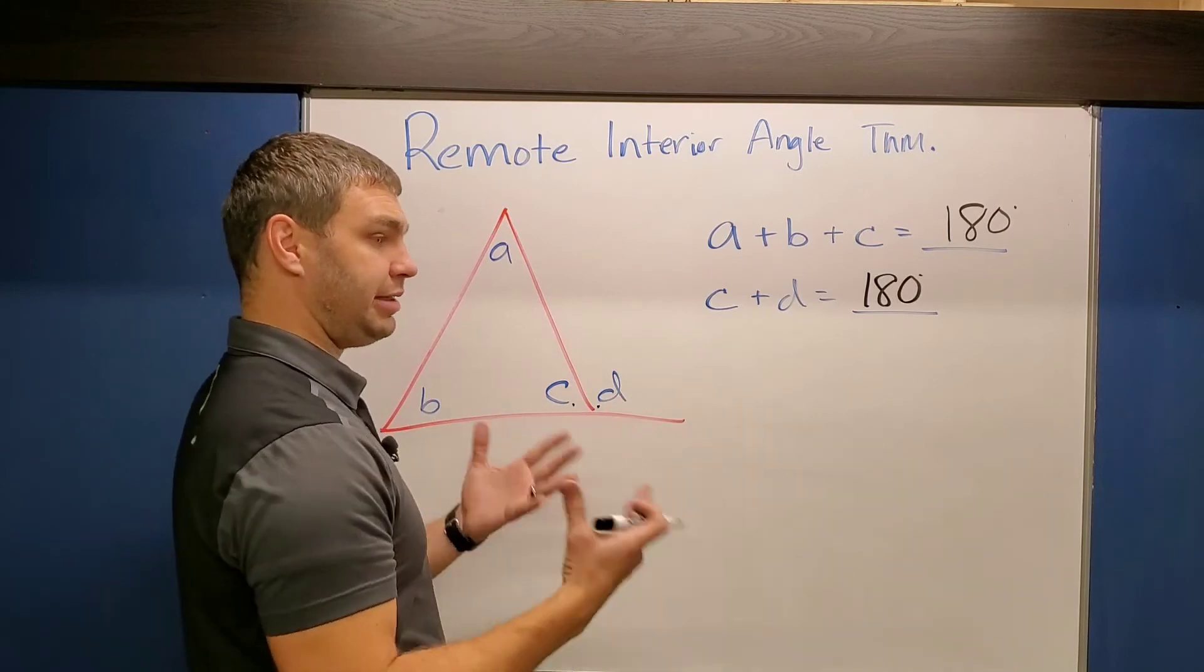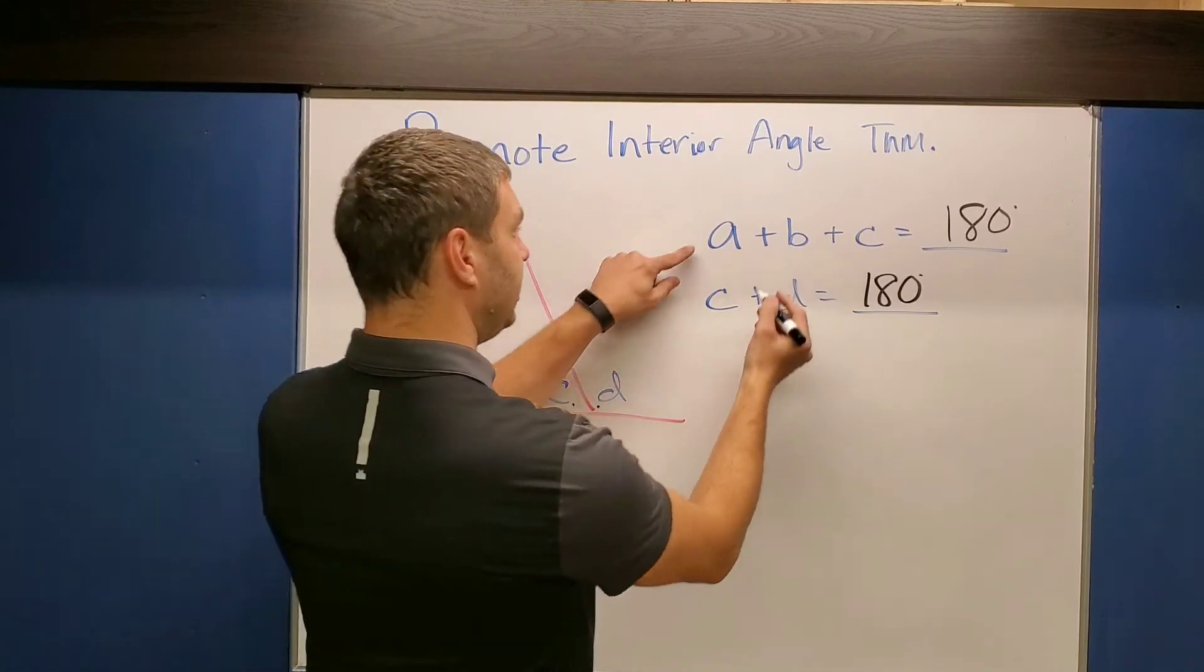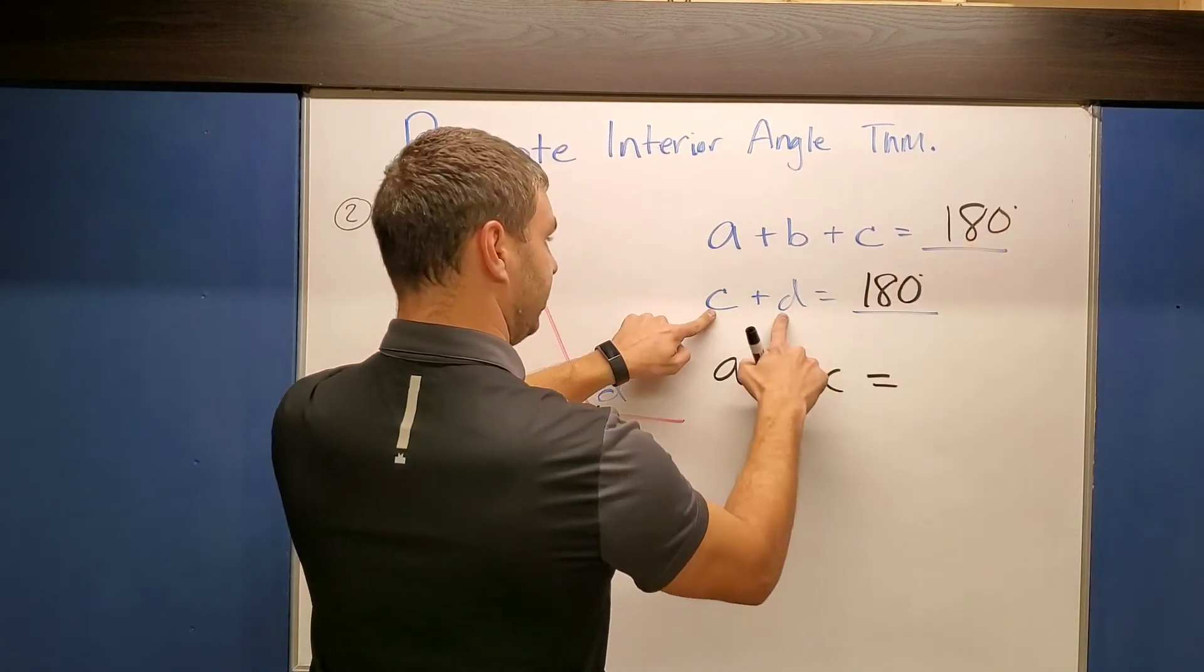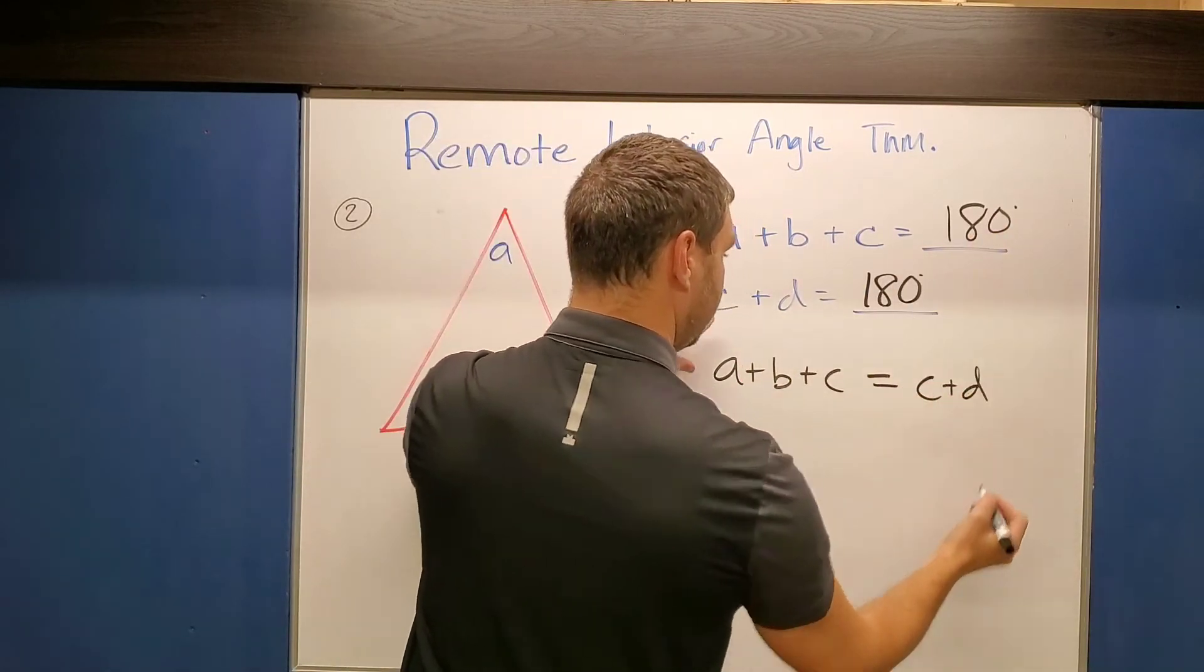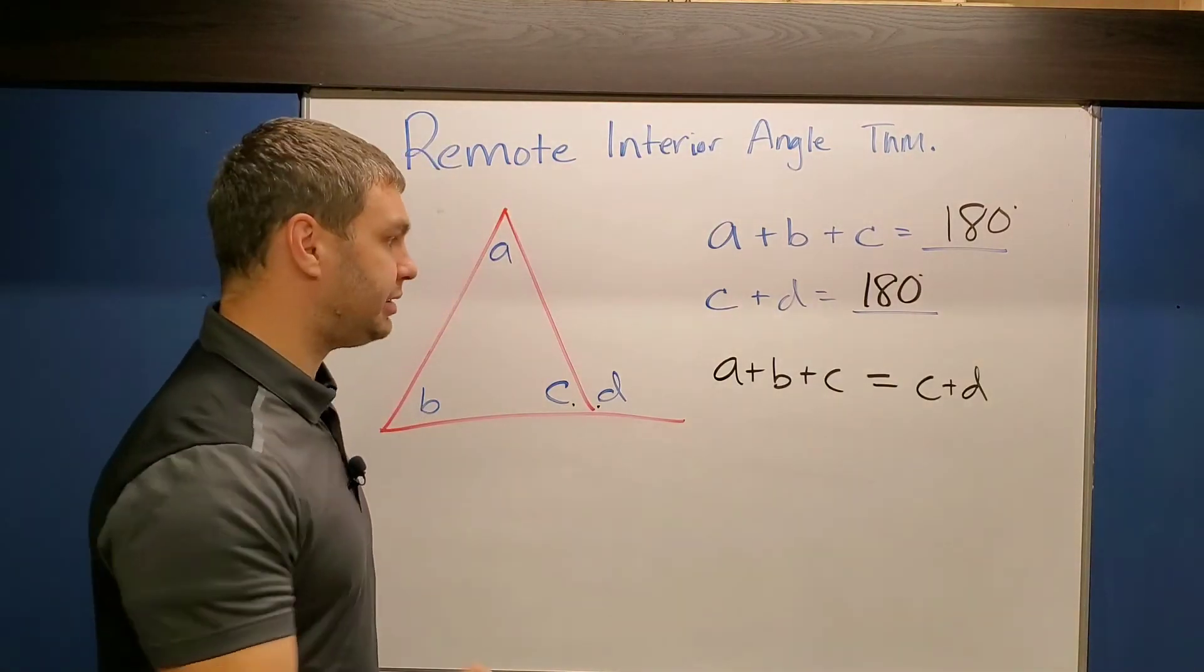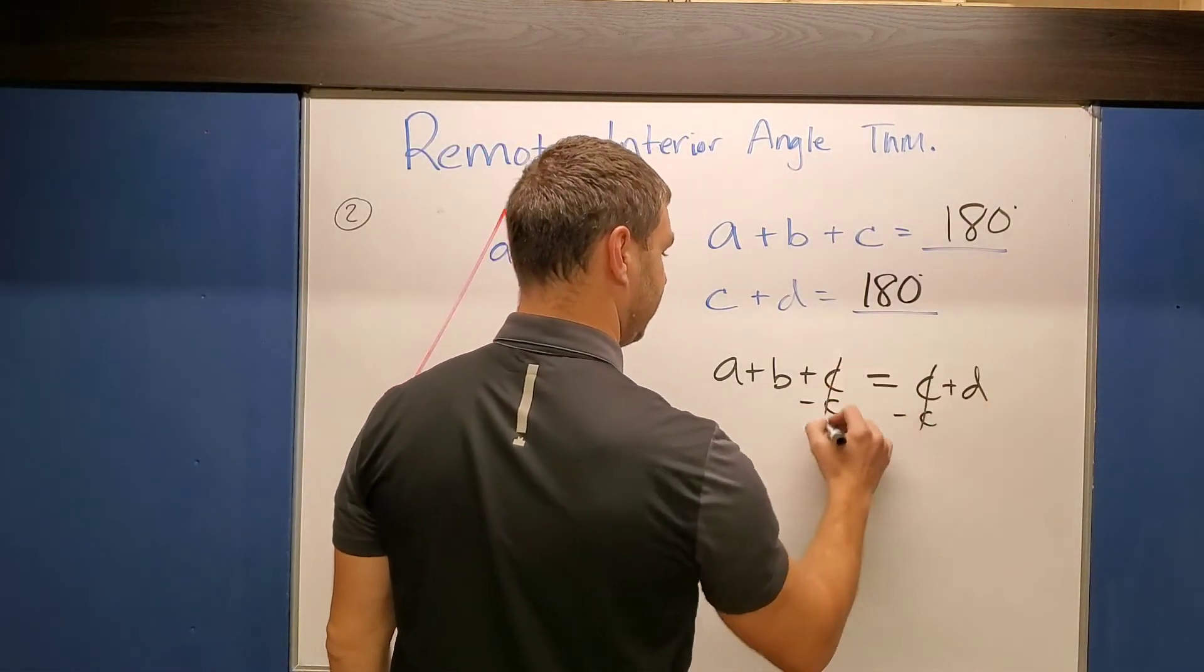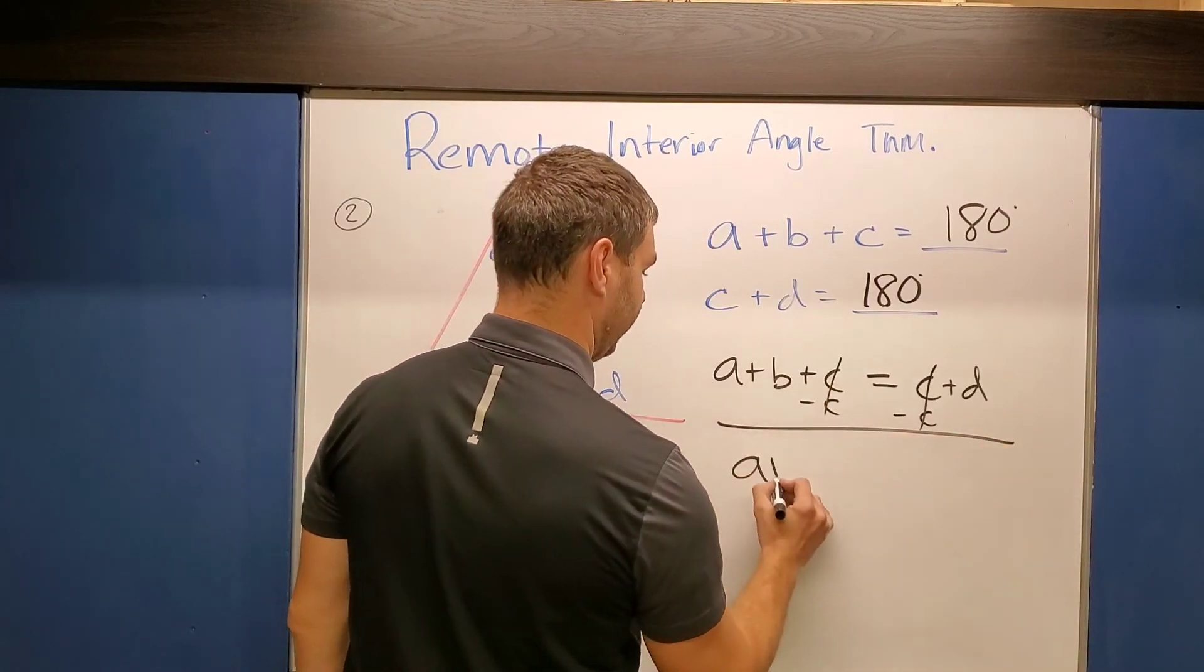If they both equal 180, that's the same thing. So they have to equal each other. So what I can say then is that a plus b plus c equals this c plus d. All right, and this helps because they both include a c. So if I subtract c on both sides, they're going to cancel, leaving me with a plus b equals d.